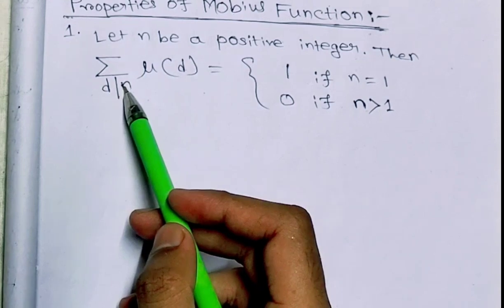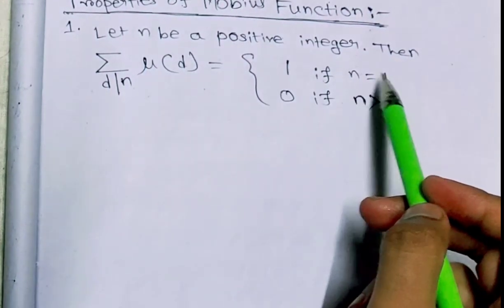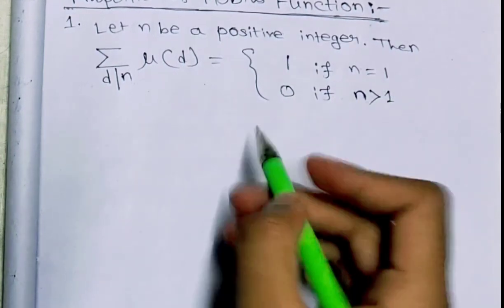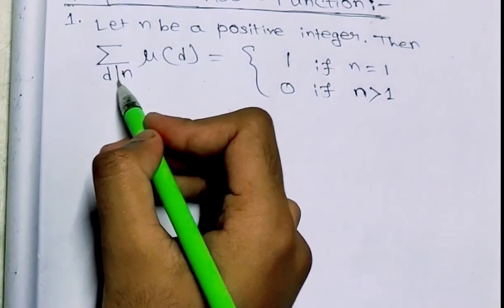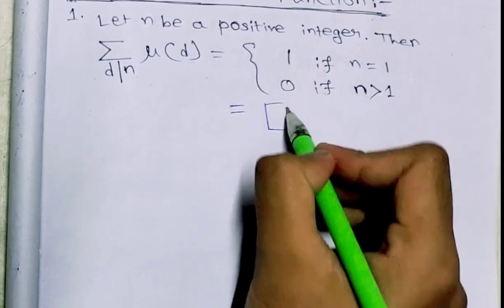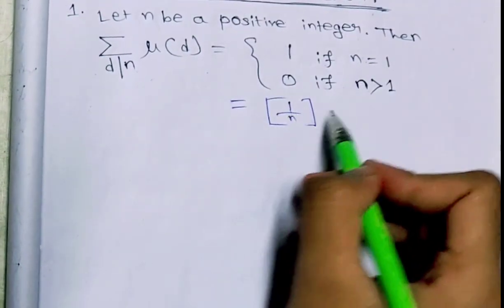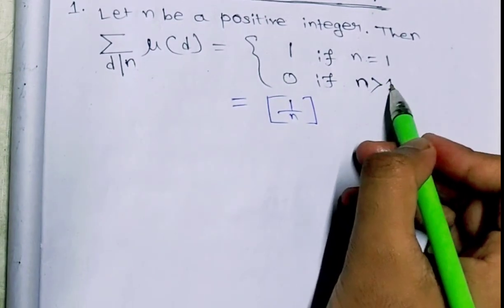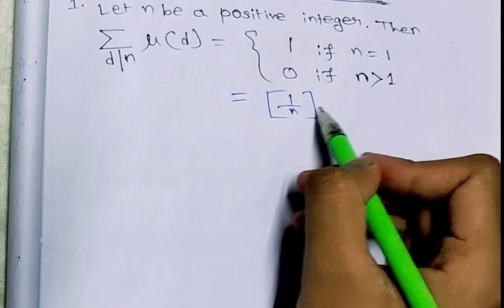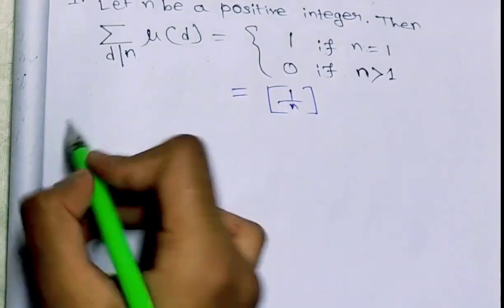We have summation over d dividing n of μ(d), which equals ⌊1/n⌋. If n equals 1, the value is 1; if n is greater than 1, then 1/n is less than 1, so ⌊1/n⌋ equals 0. So we can also write it as ⌊1/n⌋.